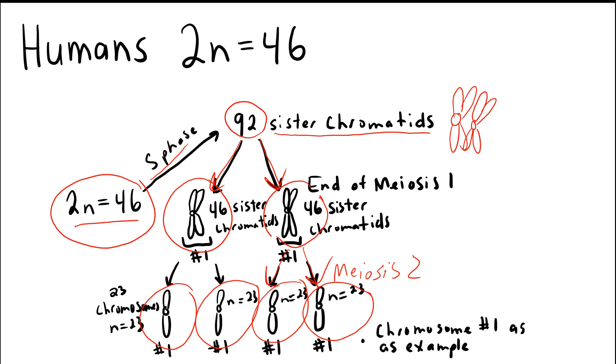Basically what I've showed you here is an example of chromosome number one. So I've only shown you chromosome number one. But for this process, each daughter cell would get 23 complete chromosomes. That would be one set in these gametes.